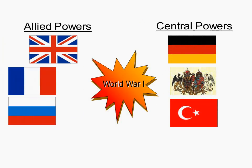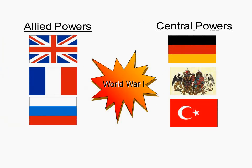There were two major groups in World War I. The Allied Powers were Russia, France, and Great Britain. The Central Powers were Italy, Germany, and Turkey.